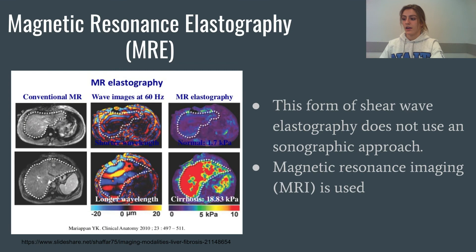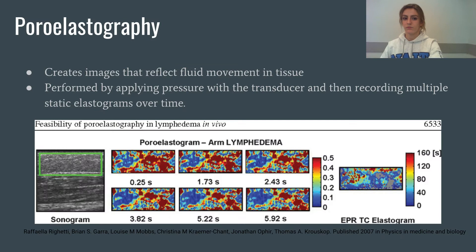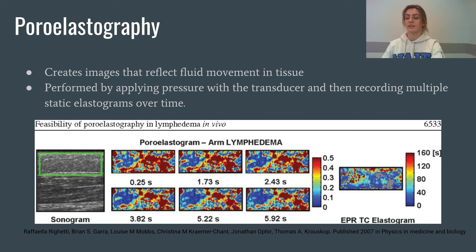Magnetic Resonance Elastography, or MRE, does not use a sonographic approach. MRI is used to generate shear waves within the body, save images of the propagation of the shear waves using MRE technology, and then process these acquired images to generate quantitative maps of tissue stiffness, or elastograms. Finally, we have poroelastography. Poroelastography creates images that reflect fluid movement in tissue — tissue is viewed as a porous substance that contains liquids. Pressure is applied with the transducer, and multiple images are recorded to produce multiple static elastograms over time. The Poisson's ratio is then calculated at every point in these images to show fluid movement. This method is still under experimentation, and lymphedemas are often used for this.